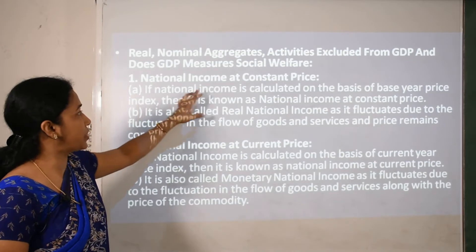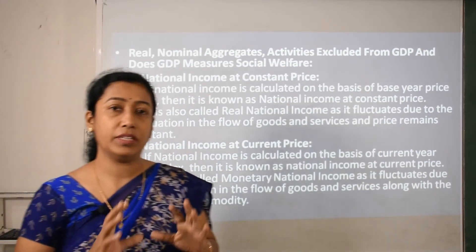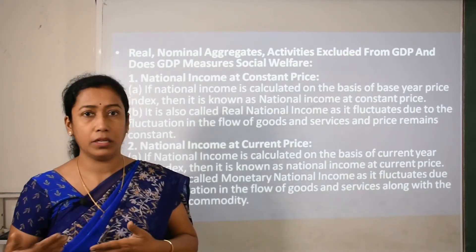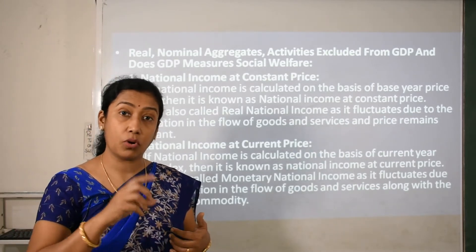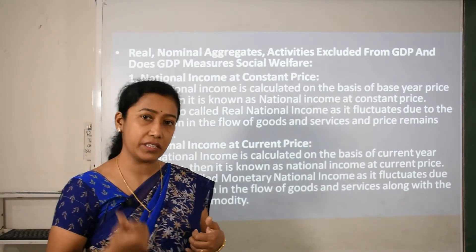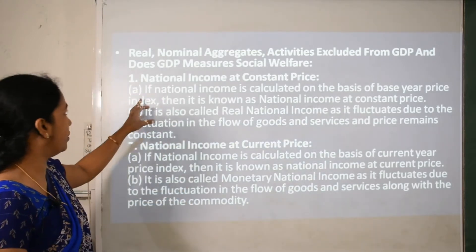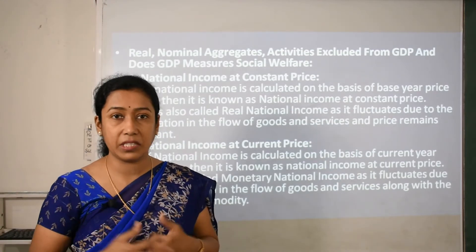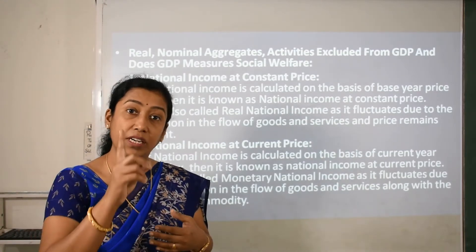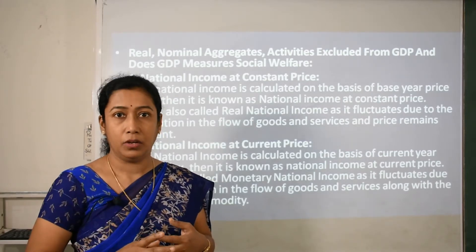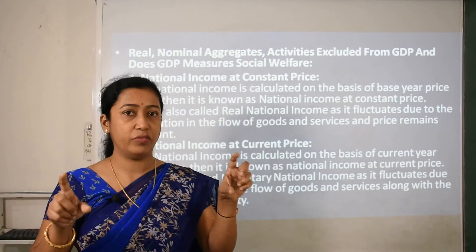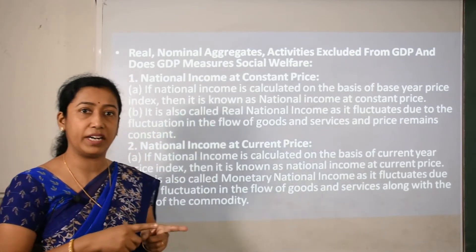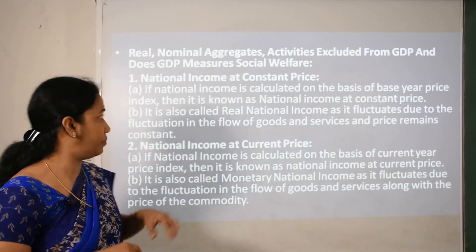Starting with national income at constant prices. Whenever we calculate national income, it can be calculated at either constant price or current price. When calculated at constant price, it is called real national income. When we try to calculate over a five to six year time period, we need to calculate on the basis of a base year — one particular year selected from that period.